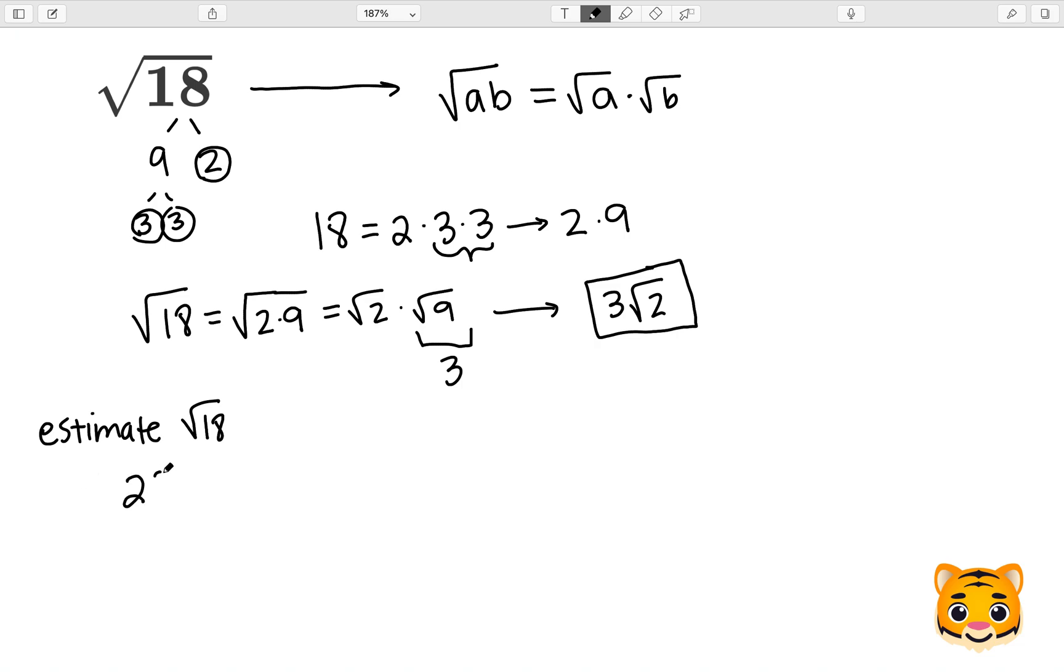We can think about 2 squared, 3 squared, 4 squared, and 5 squared. So 2 squared gives us 4, 3 squared gives us 9, 4 squared gives us 16, and 5 squared gives us 25.